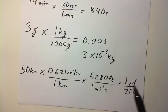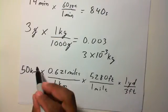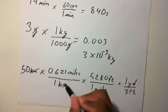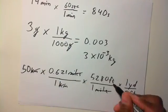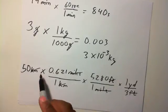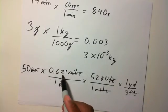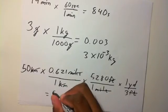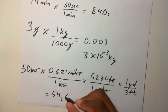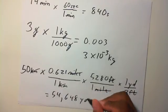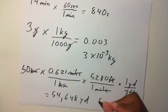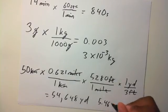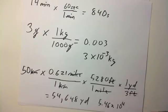Remember what you want to change to, you put on the top. What you want to get rid of, you put on the bottom. See here, the kilometers cancel out, the miles cancel out, and the feet cancel out. So basically it's 50 times 0.621 times 5,280 times one third yards. And the answer here is 54,648 yards, or in scientific notation, 5.46 times 10 to the 4 yards.